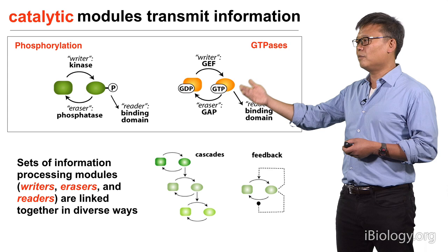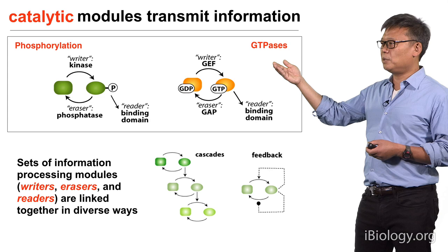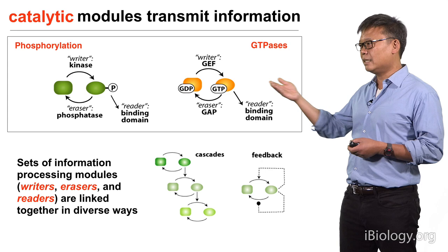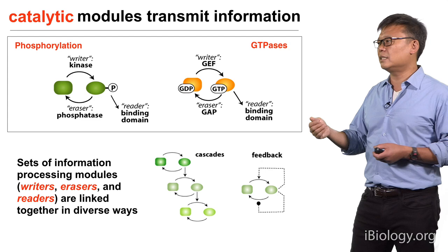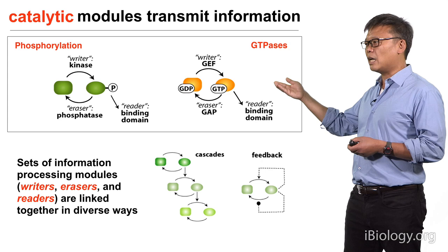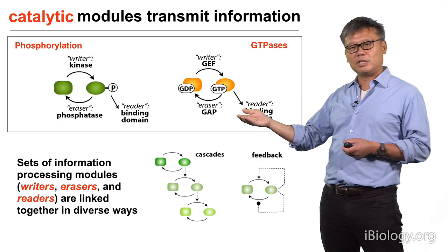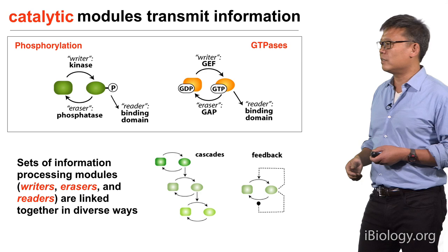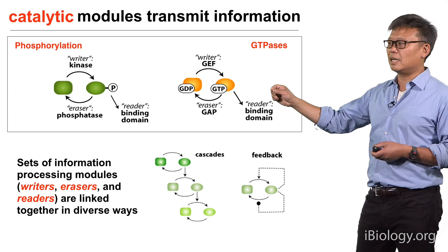Another example that is exactly parallel are the enzymes that regulate GTPases. GTPases can exist in two forms: the GDP-bound state and then the GTP-bound state, which is usually the active one. The transitions between these states are mediated by another set of writer and eraser catalytic activities. GEFs, or guanine nucleotide exchange factors, lead to putting on GTP and activating the GTPase protein, whereas GAP proteins, or GTPase-activated proteins, lead to the hydrolysis of GTP and turning off of the system. And once again, there are also reader domains that can recognize the specific activated form of the GTP.